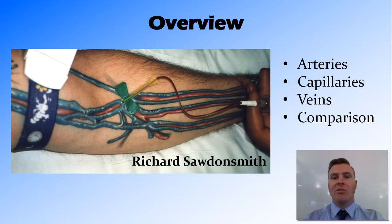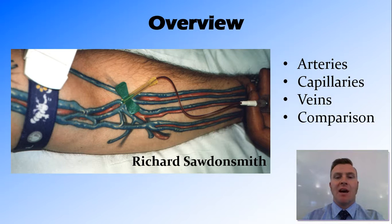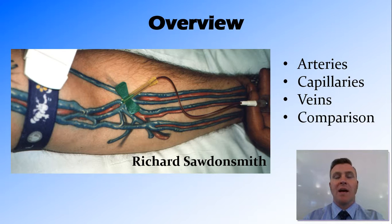In this video we have looked at blood vessels. We've looked at arteries which carry blood away from the heart; capillaries where the exchange of nutrients across a wall that is one cell thick occurs; and veins which carry blood back to the heart and rely on skeletal muscle for that to occur. We've also compared arteries and veins: arteries are round, have a smaller lumen, and have a thick layer of smooth muscle in their tunica media. Thanks for watching guys, peace out.